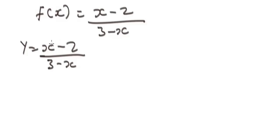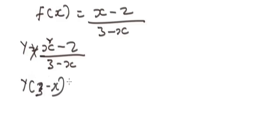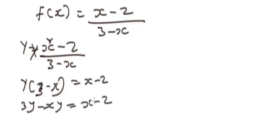When you have a variable in the numerator, like x here, we first need to express x in terms of y. So we cross multiply, giving us y times (3 − x) = x − 2. We want to make x the subject of the formula, so we rearrange the terms.